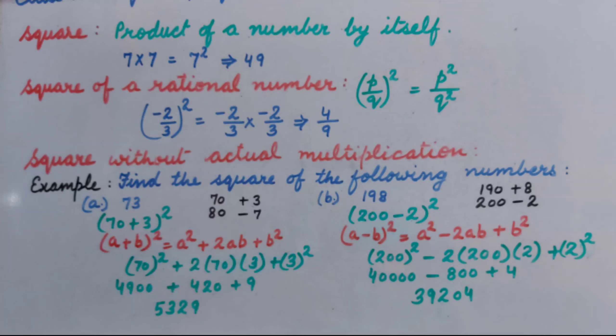A plus B whole square equal to A square plus 2AB plus B square is the identity.